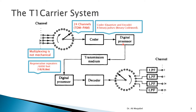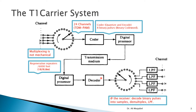The digital processor converts the signal into the format and pulse shape suited for the transmission medium. In the T1 standard, the spacing between regenerative repeaters is about two kilometers, or six thousand feet in the American standard. So every six thousand feet we have another repeater to regenerate the pulses. At the receiver side, we have a digital processor that performs the decoding.